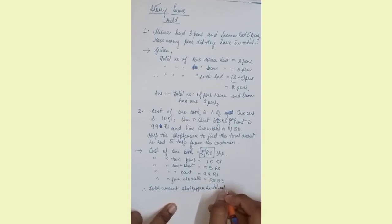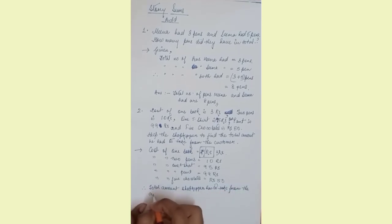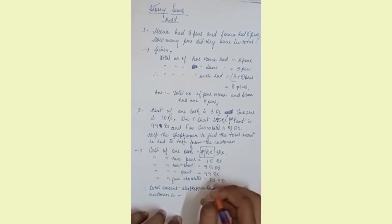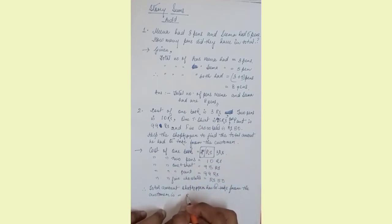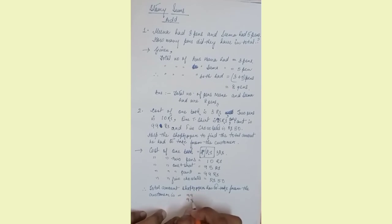Therefore, total amount shopkeeper has to take from the customer. Most of the students what they do is put a plus sign and keep on doing, but we will not do that. We will put bigger numbers: 99, 95, then 50, 10, 3, so that our calculation becomes easy.